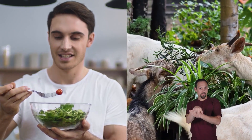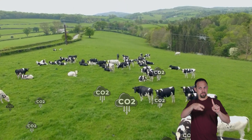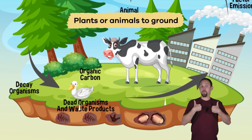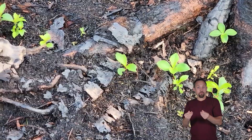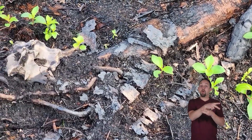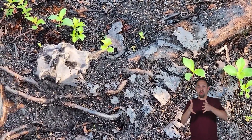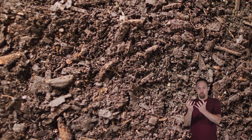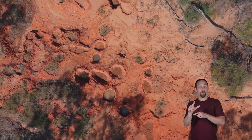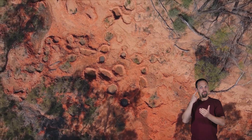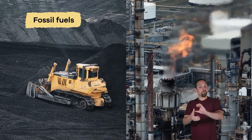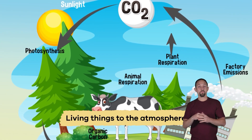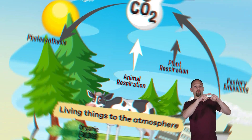Plants to animals: humans and other animals eat plants, transferring the carbon from the plants into the animals. Plants or animals to ground: when a plant or an animal dies, their remains decompose, which means that the leftover carbon is absorbed into the soil. Carbon that remains in the ground for thousands of years converts to fossil fuels like coal and oil.